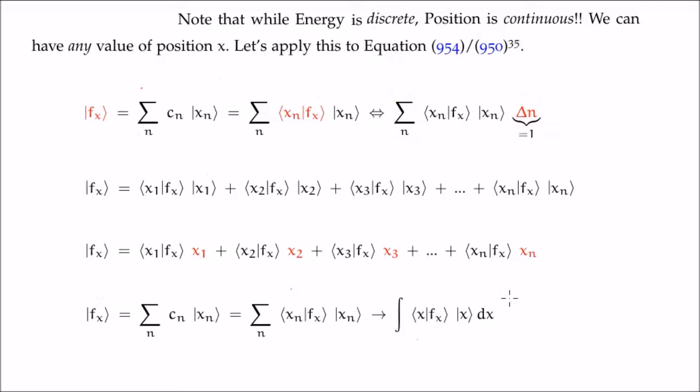We have our arbitrary abstract quantum state living in position Hilbert space. It's described by a linear combination of what we're calling discrete position eigenstates. The thing is though, as I said a moment ago, position is actually continuous, not quantized.